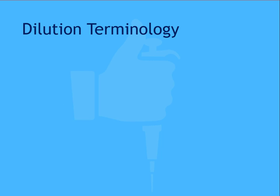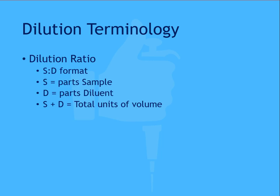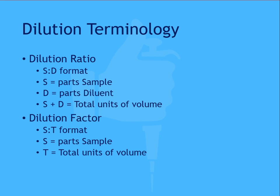There are two ways to refer to sample dilutions, and they can be a little bit confusing as the way they're written is very similar. First, the dilution ratio nomenclature. This is written in terms of S to D, where S is parts of sample, and D is parts of diluent. Add the parts together to find the total units of volume. The second option is the dilution factor nomenclature. This is written in terms of S to T, where S is the parts of sample, and T is the total volume.